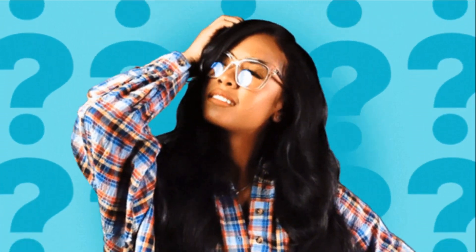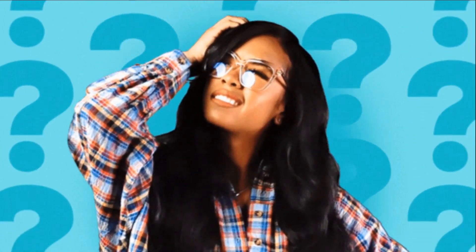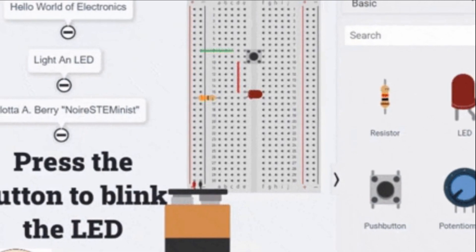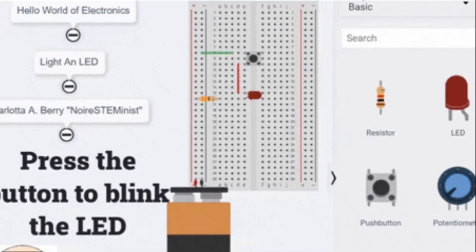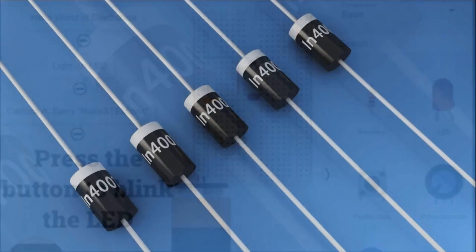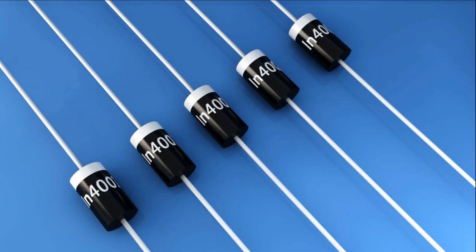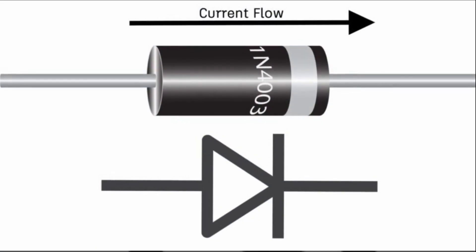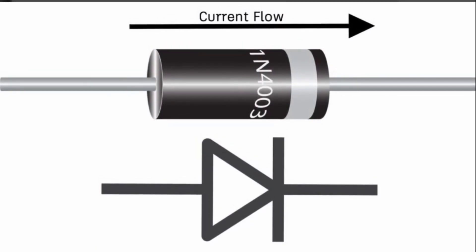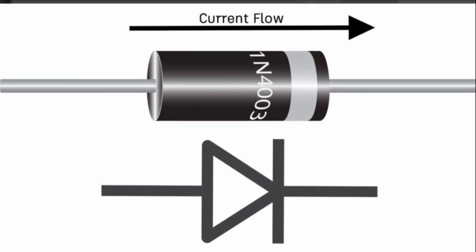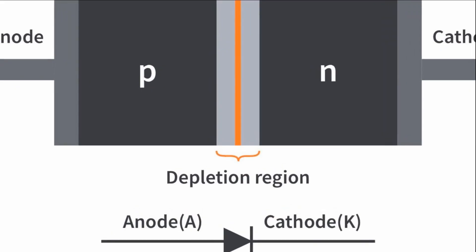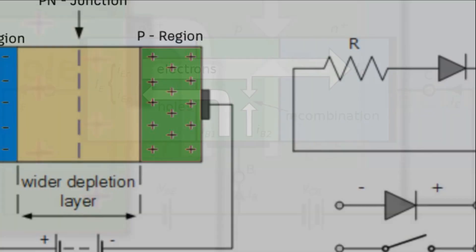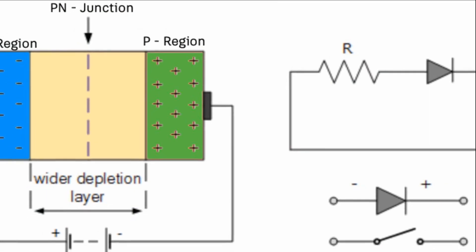Ever scratched your head wondering what exactly is a diode? Let's dive into the world of electronics and shed some light on this amazing component. A diode, in the simplest terms, is a two-terminal electronic component that primarily conducts current in one direction. Think of it like a gatekeeper, permitting the flow of current in one way while blocking it from the other.